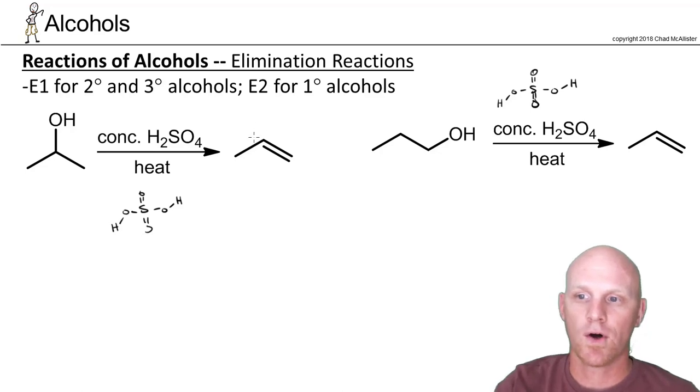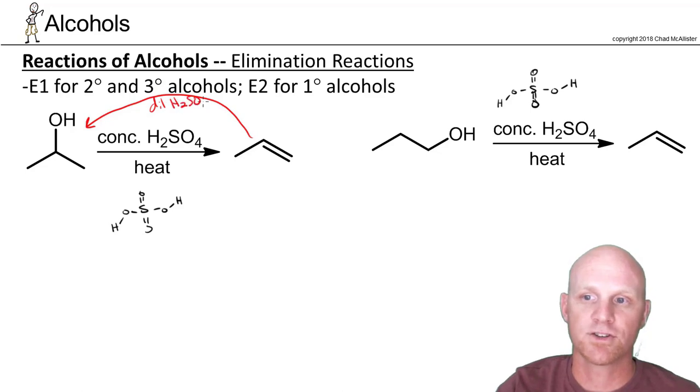You might recall that we learned I can turn an alkene into an alcohol using dilute H₂SO₄. In this case, we can go the opposite direction if we use concentrated H₂SO₄. It turns out there's an equilibrium here, and with this equilibrium,